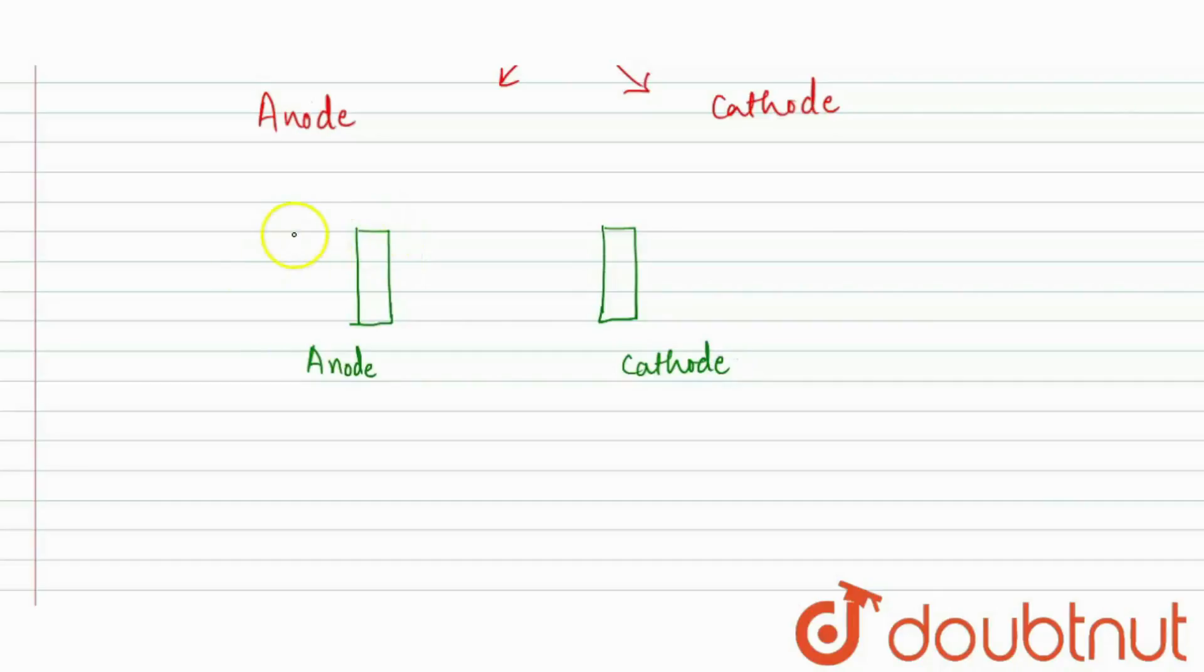So in a cell what happens? It is negative and it is positive. So at anode oxidation takes place, and at cathode, reduction takes place.